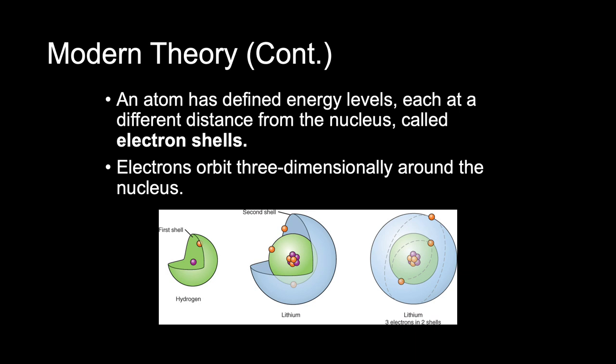Electrons do not all occupy the same orbit at the same distance from the nucleus. An atom has defined energy levels, each at a different distance from the nucleus. These energy levels are called electron shells, and they describe a sphere around the nucleus. Electrons orbit three-dimensionally around the nucleus — not simply in a single plane, as illustrated in textbooks for simplicity. In these figures, you can see one, two, and three electron shells illustrated progressively.